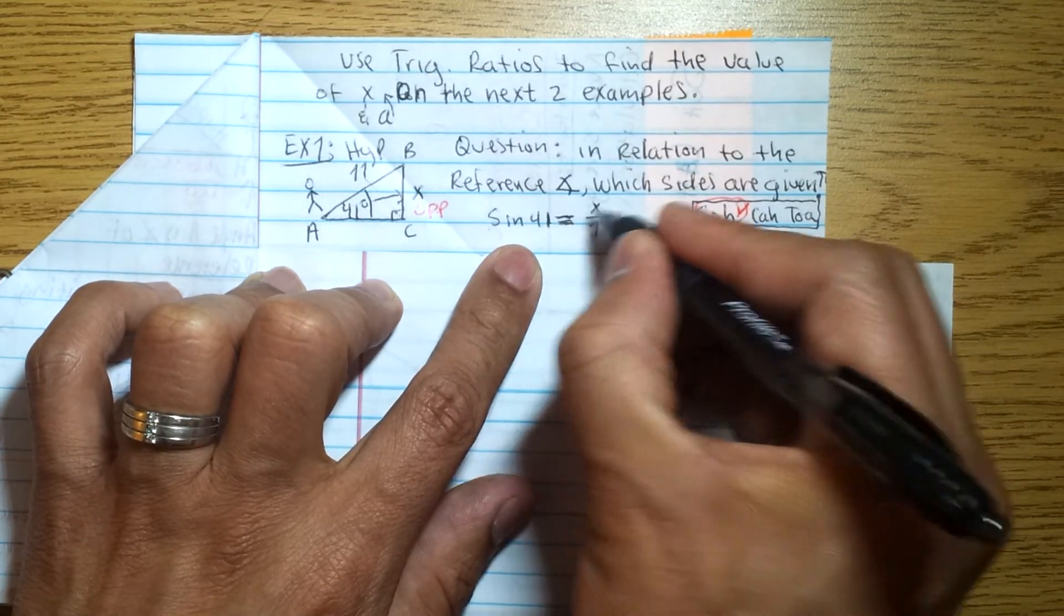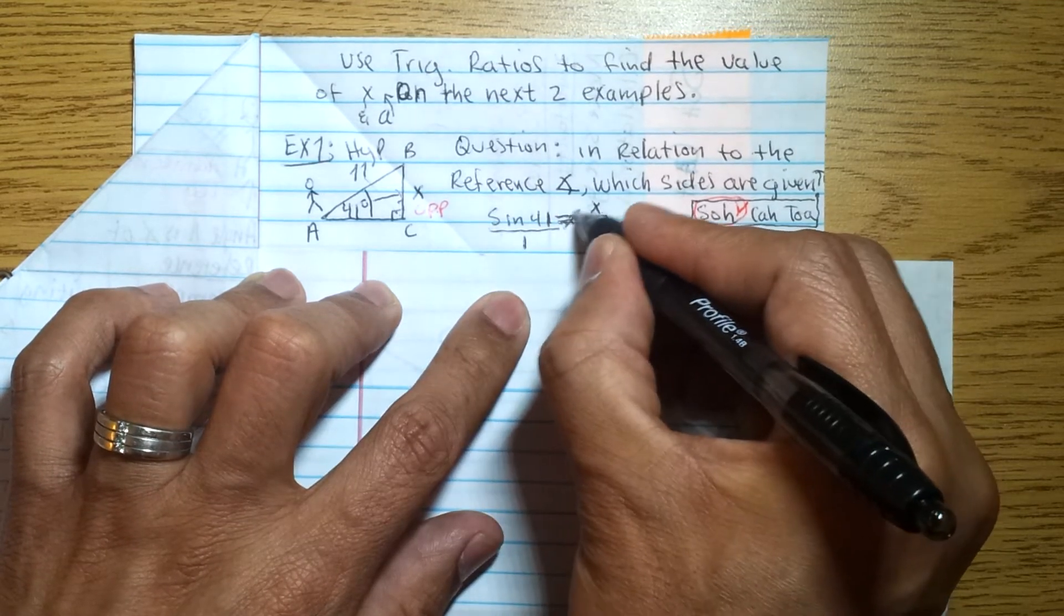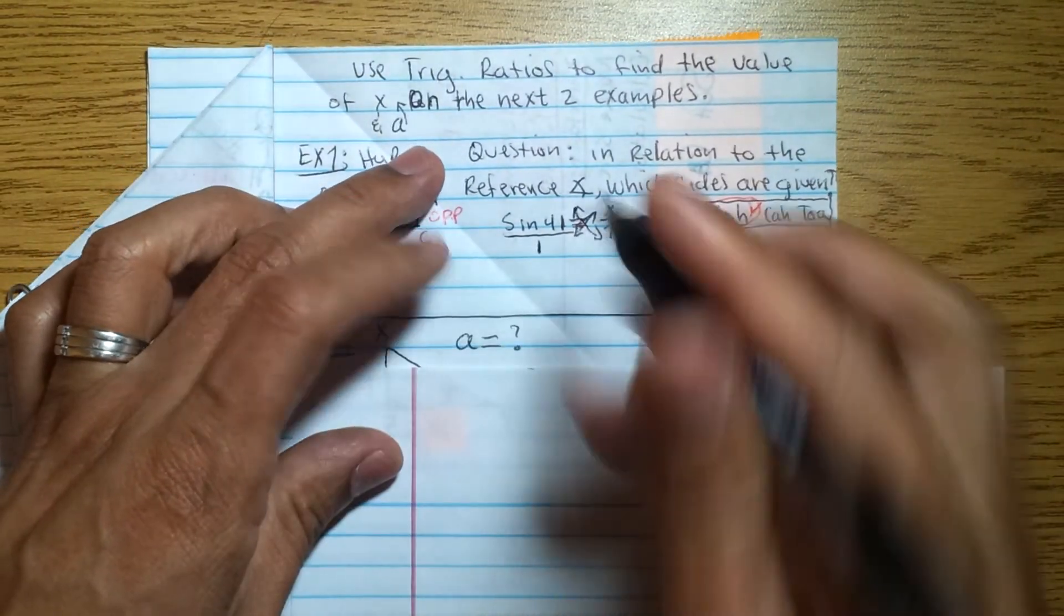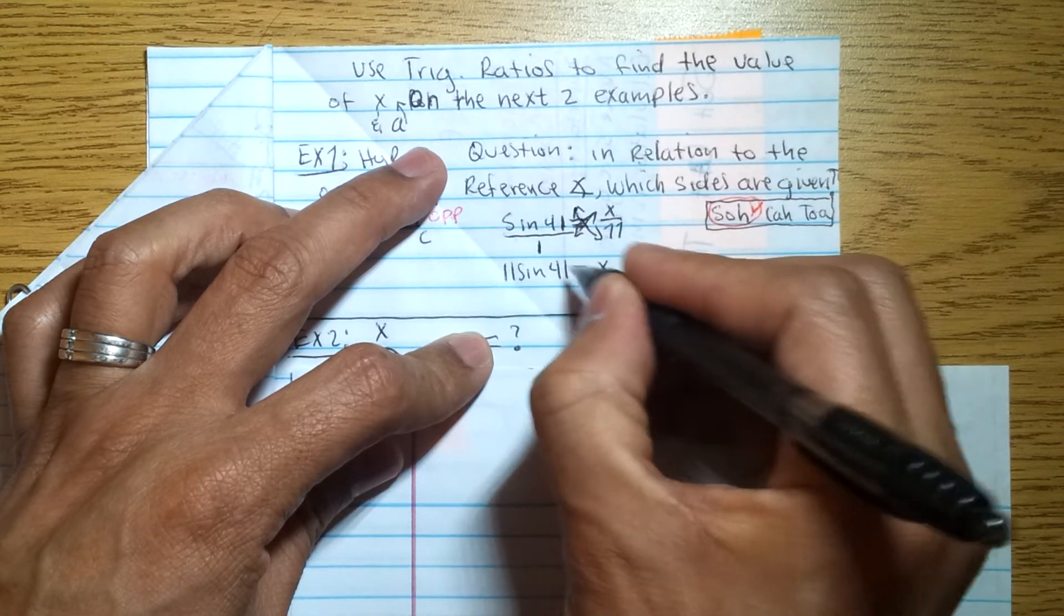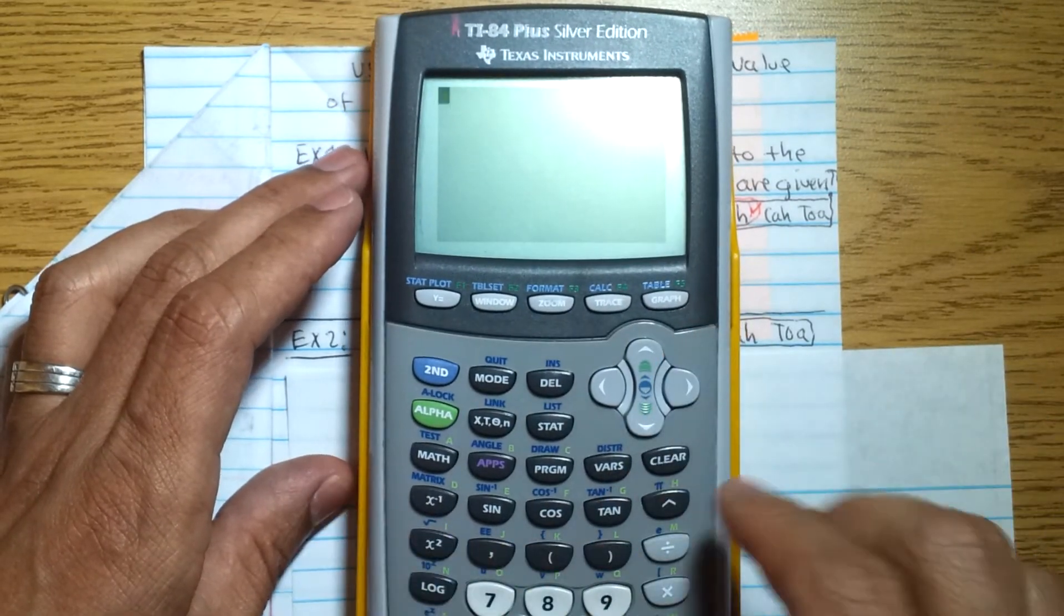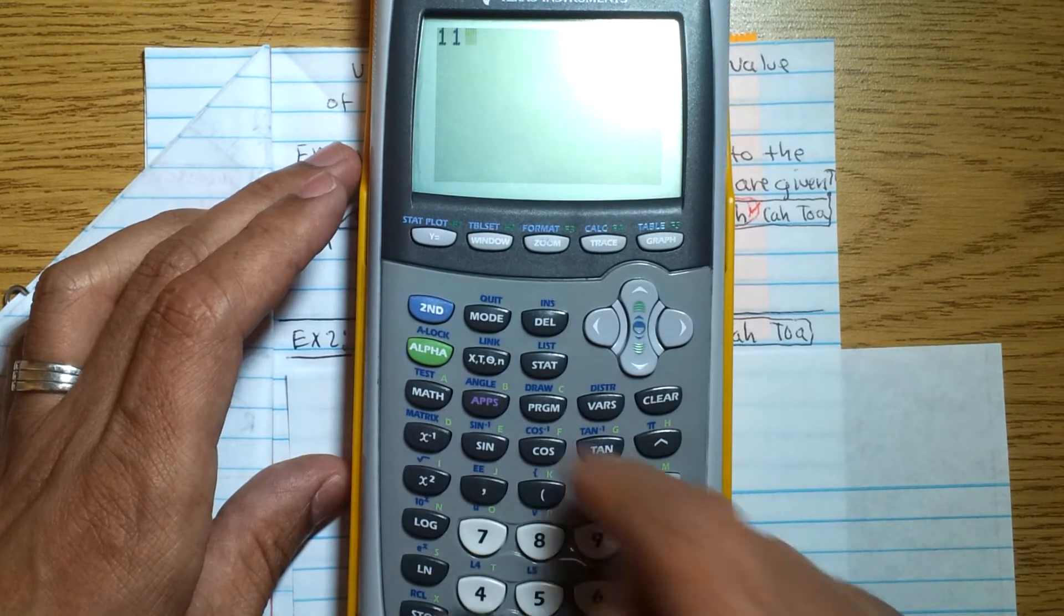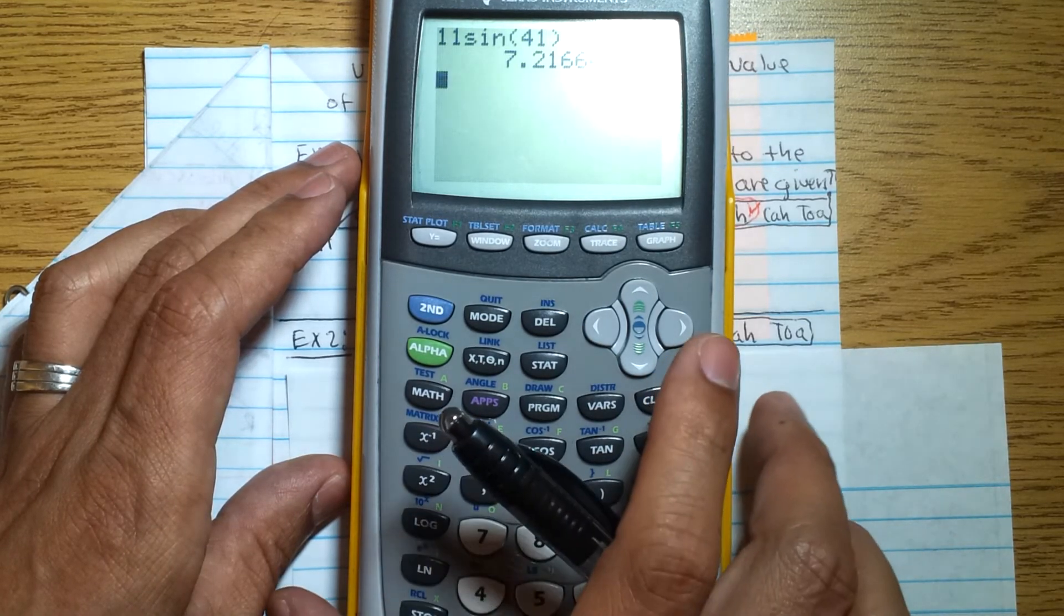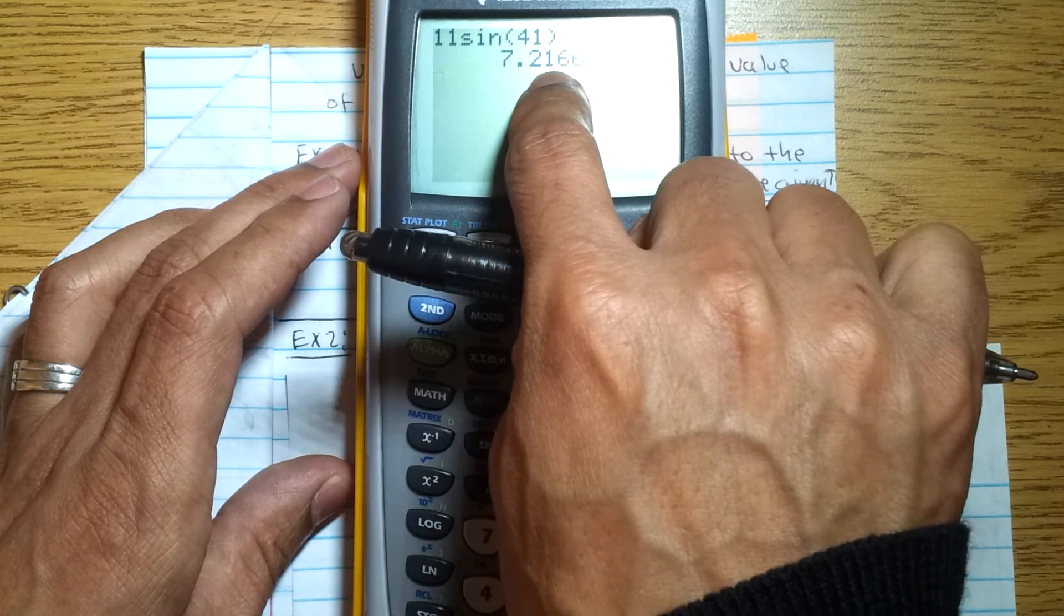We have done this before in class. This is just a proportion, so that you can see it. Just write a 1 under that sine 41, and then we cross-multiply. So then we have 11 times sine 41, simply 11 sine 41 equals X. Once you're here, just enter that in your calculator. I know you can't see it on the camera, but it's 11 sine 41. So I'm going to do 11, and then there's a sine button, so 11 sine 41, and I press enter, and I get 7.26. So I'm going to round that one up to a 2, so 7.22.